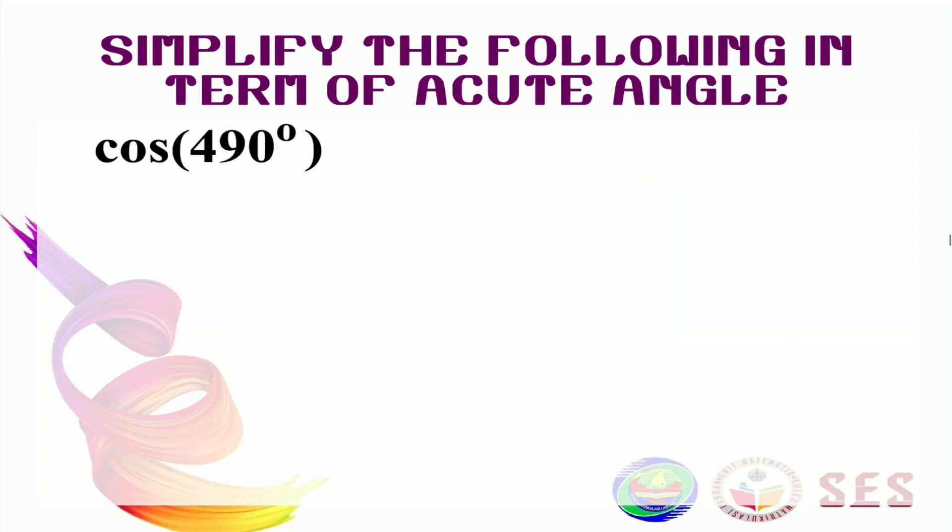Still confused? Let's see another example. Cos 490. Remember our steps. The first thing to do is to sketch. The second thing to do is to determine its quadrant. So let's sketch first. So 360. 490 exceeds the first rotation here. But that's okay. All the steps are still the same, even if it's in the second rotation.